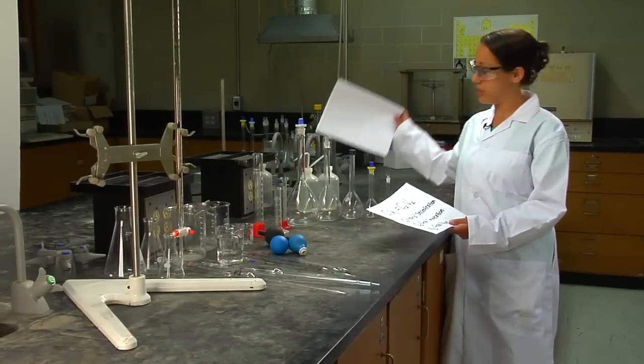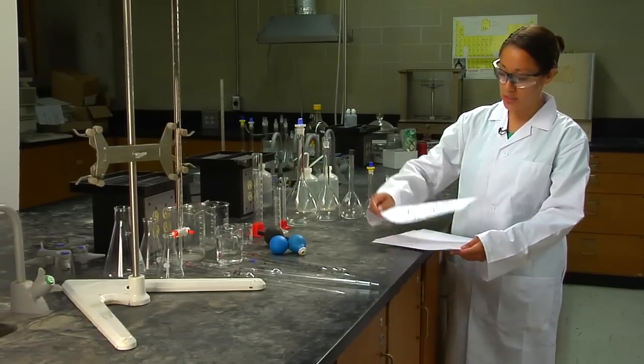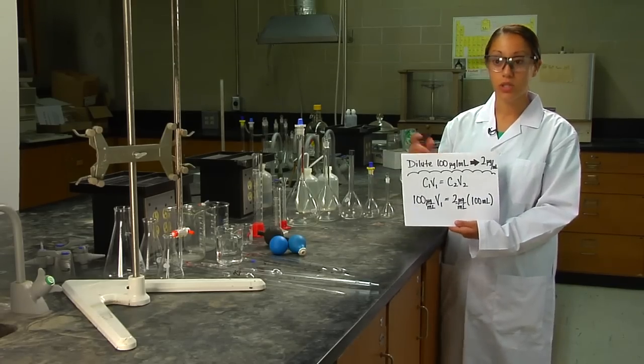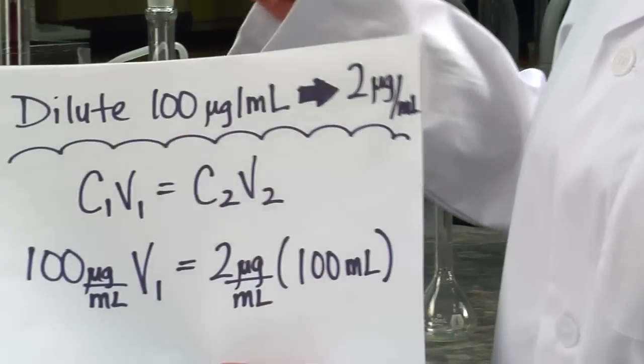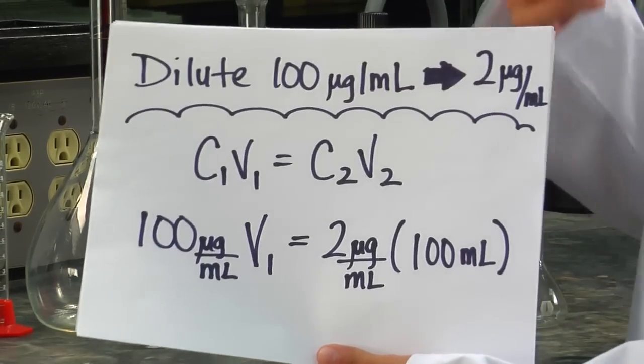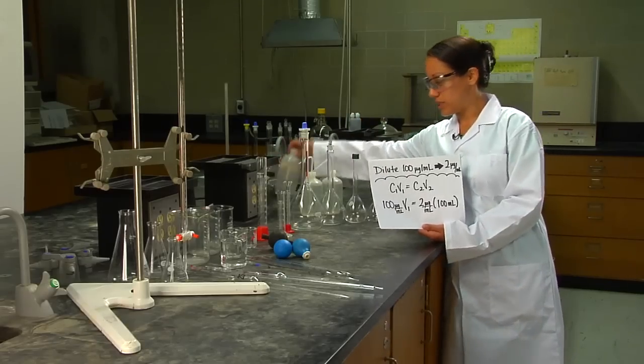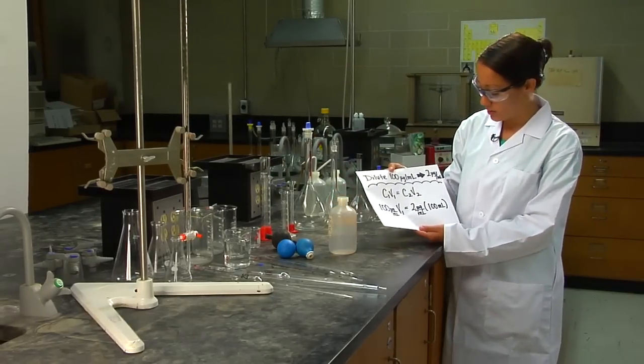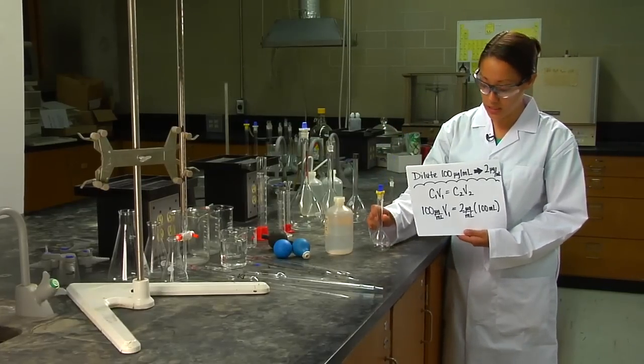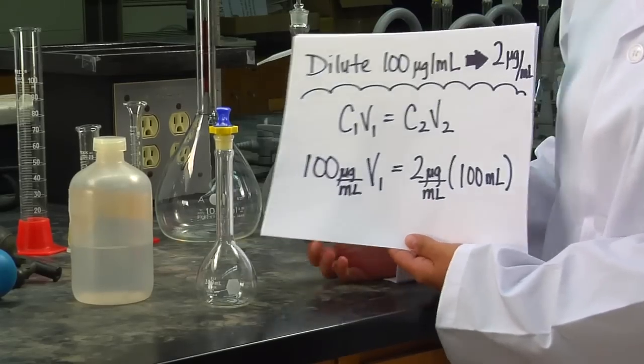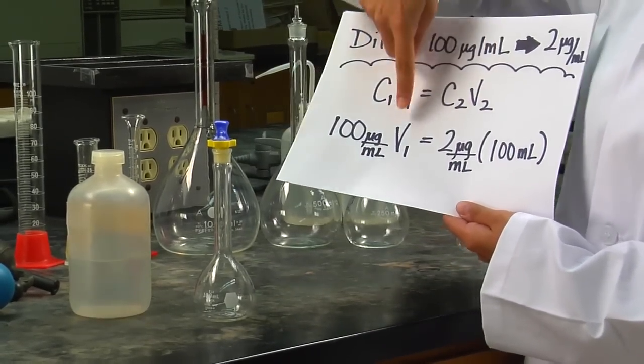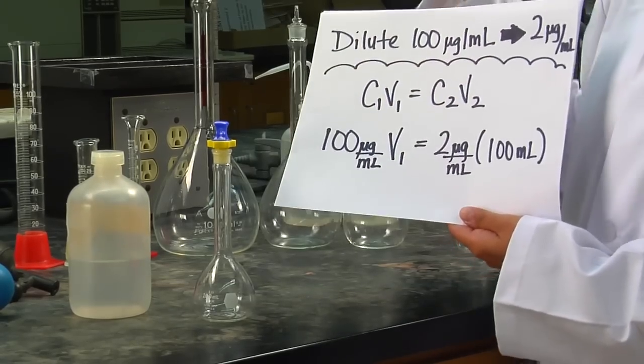Doing an easy example by diluting 100 micrograms per milliliter, which is also parts per million. To dilute 100 ppm to 2 ppm, we take 100 ppm sodium stock solution and we want to make 2 ppm in 100 milliliters. Conveniently this equation works out very easy, and you can figure out that your initial volume, which is your V1, is 2 milliliters.